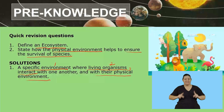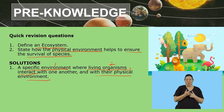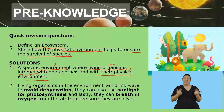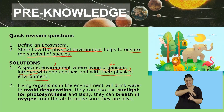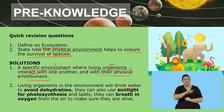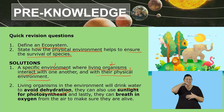Moving on to our second question: state how the physical environment helps to ensure the survival of species. How does the environment make sure that species survive or continue to live? Living organisms in an environment will drink water to avoid dehydration.